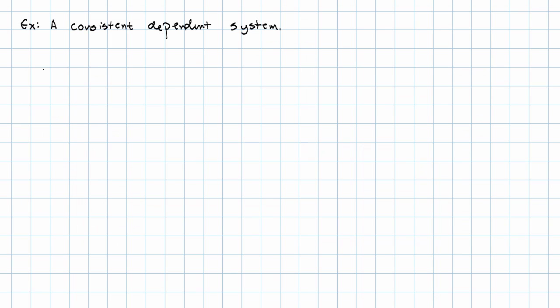Here's an example of a consistent dependent system. The system 2x minus 5y equals 10 and y equals 2/5x minus 2 is consistent dependent.